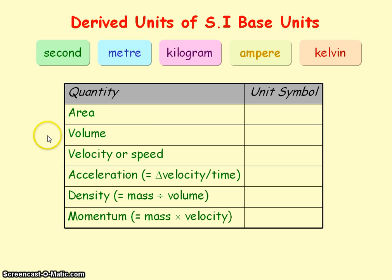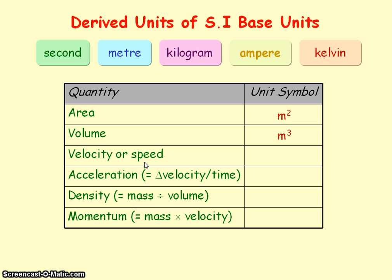The derived unit for area is meters squared, volume is meters cubed, and speed, which is equal to distance travelled divided by the time taken, will have the units of meters per second.